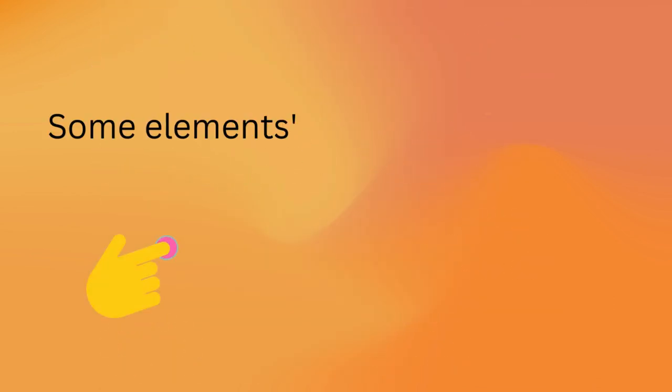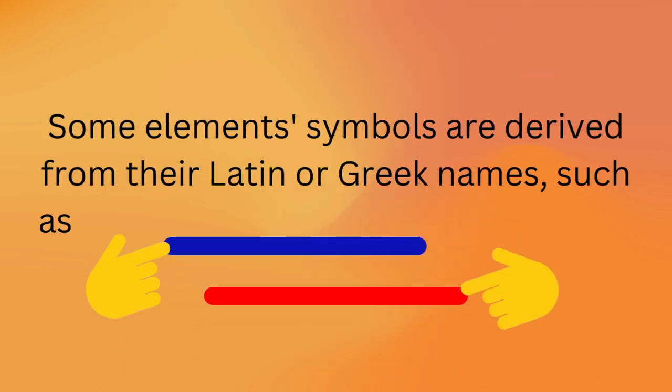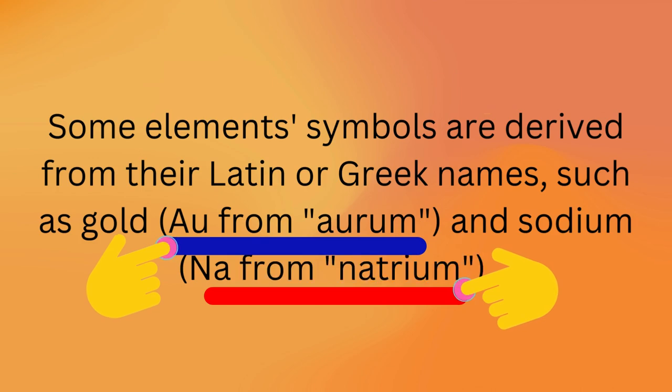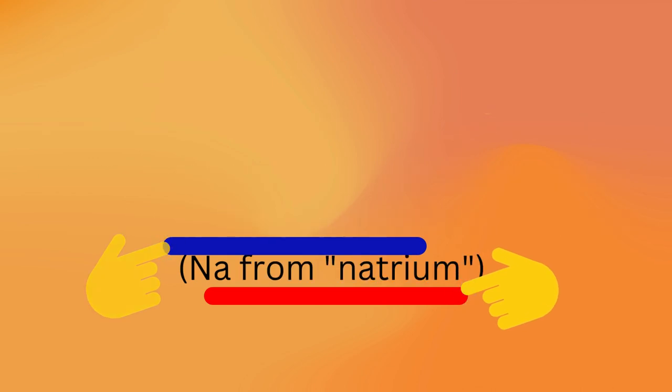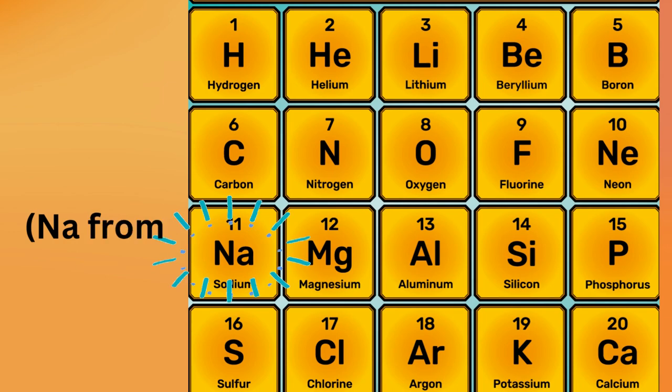Some element symbols are derived from their Latin or Greek names, such as gold (Au) from aurum, and sodium (Na) from natrium.